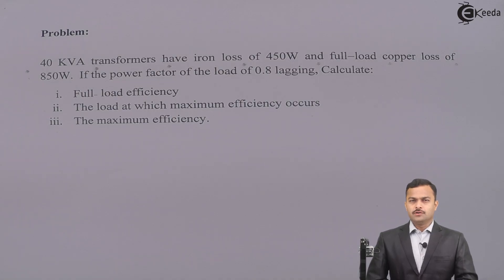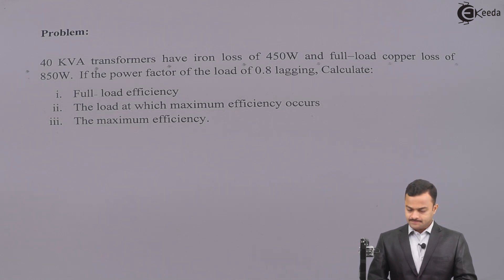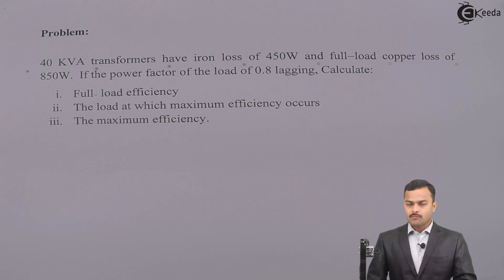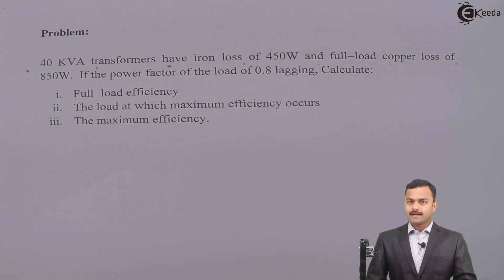Hi friends. In this video we are going to solve a problem based on efficiency of a single phase transformer. The statement of the problem is: a 40 kVA transformer has iron loss 450 watts and full load copper loss of 850 watts. If the power factor of the load is 0.8 lagging, calculate: first, the full load efficiency; second, the load at which maximum efficiency occurs; and third, the maximum efficiency.